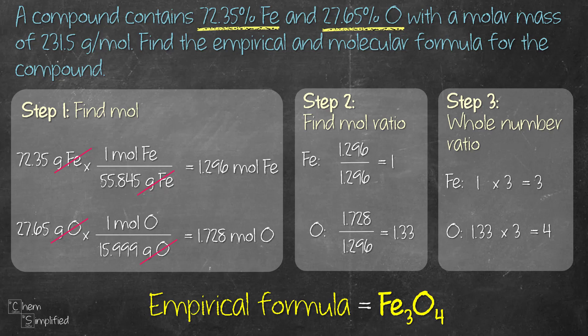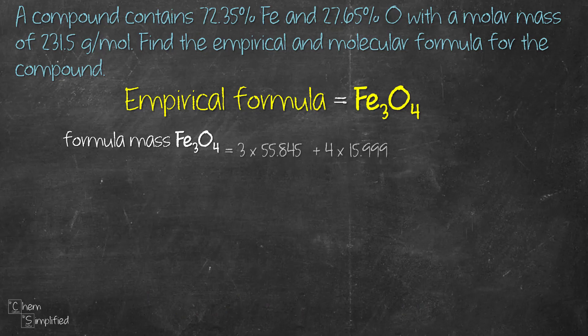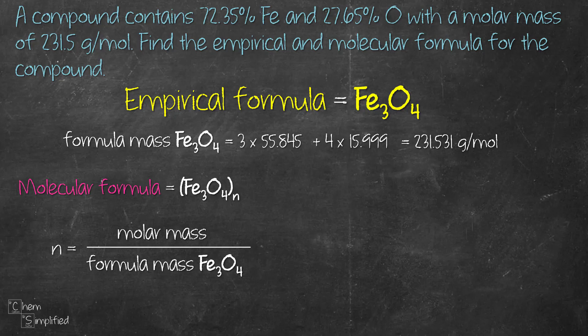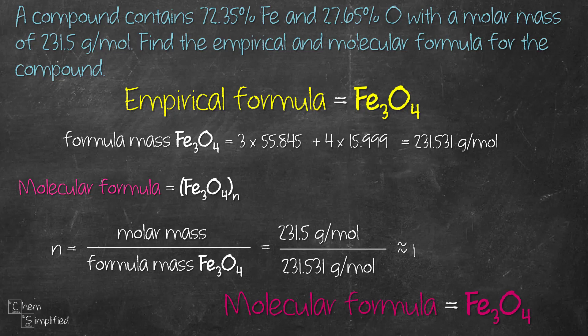From the empirical formula, we can easily find the molecular formula. We start by calculating the formula mass for the empirical formula. We find the atomic mass for Fe and O, multiply them with 3 and 4, add it up and that gives us 231.531 grams per mole. That's the mass for Fe3O4. That's the empirical mass formula. Now the molecular formula is the empirical formula times a factor n. We don't know what is n and we can find that out by dividing the given molar mass with the mass of Fe3O4 which is our empirical formula. Plugging in the given molar mass 231.5 grams per mole divided by the formula mass of our empirical formula, that comes out to be roughly 1. So that means the molecular formula for this compound is actually the same as the empirical formula which is Fe3O4.